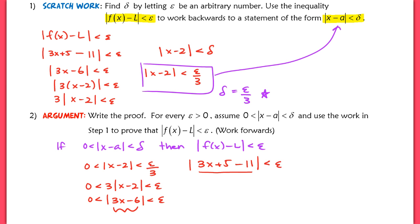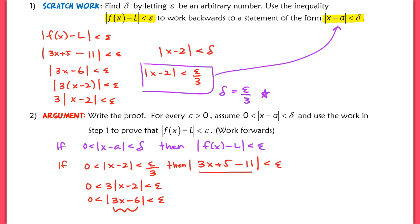That's the write-up for our proof. It says that if the distance between x and 2 is strictly between 0 and epsilon over 3 — our delta — then the distance between our function 3x plus 5 and our limit L will be less than epsilon. In other words, for whatever value of epsilon you choose, no matter how small, you can always find a delta. That delta is epsilon over 3.